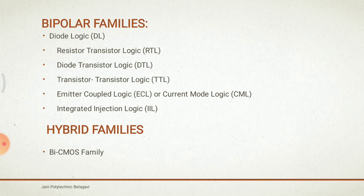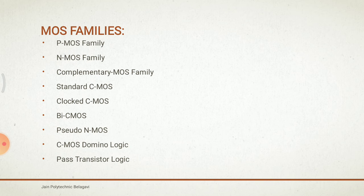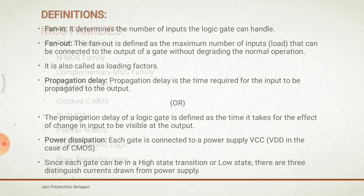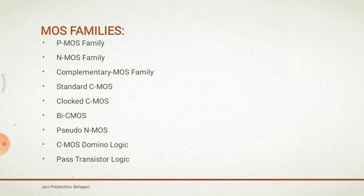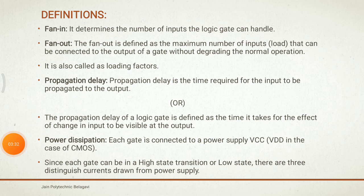The next classification is the metal oxide semiconductor (MOS) family, which includes PMOS and NMOS using P-type and N-type materials, complementary MOS (standard CMOS), clocked CMOS, bi-CMOS, pseudo-NMOS, CMOS domino logic, and pass transistor logic. The third classification is the hybrid family, specifically the bi-CMOS family, which combines elements from both bipolar and MOSFET technologies.